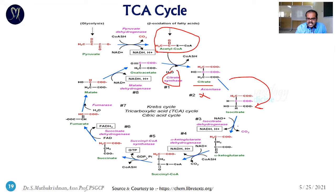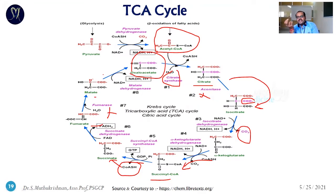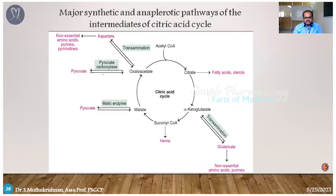Isocitrate undergoes removal of CO2 to form alpha-ketoglutarate by dehydrogenase. Then another CO2 is removed and CoA attaches to form succinyl-CoA. The CoA is then removed to give succinate. Succinate dehydrogenase removes hydrogen, converting succinate to fumarate. With water, fumarase converts fumarate to malate. Then malate dehydrogenase removes hydrogen ions with NADH, converting malate to oxaloacetate. This is the TCA cycle — it gives a large amount of energy and produces NADH.